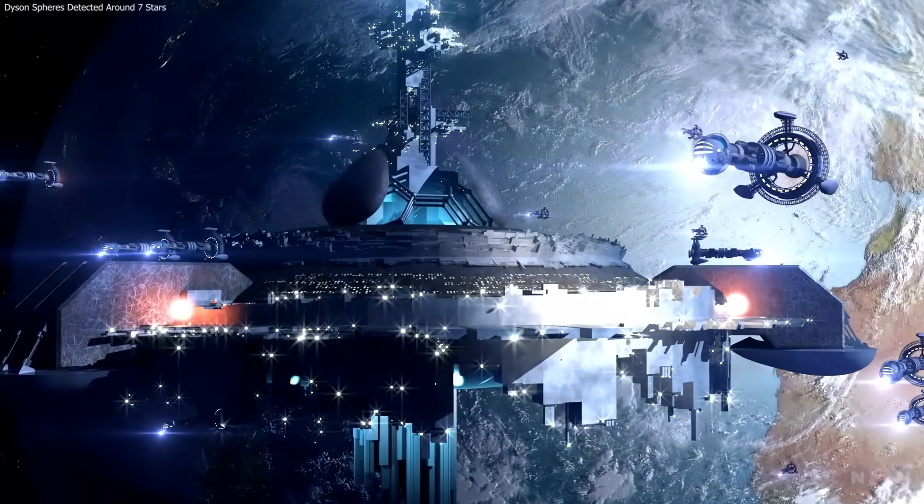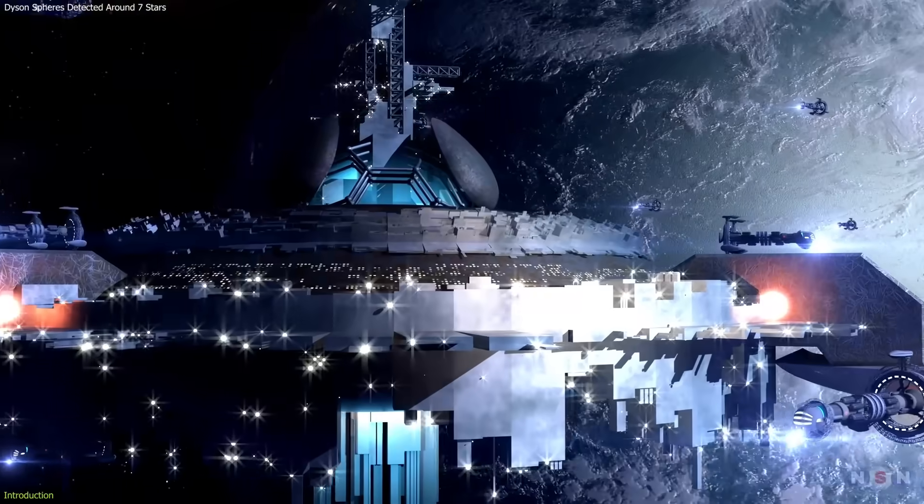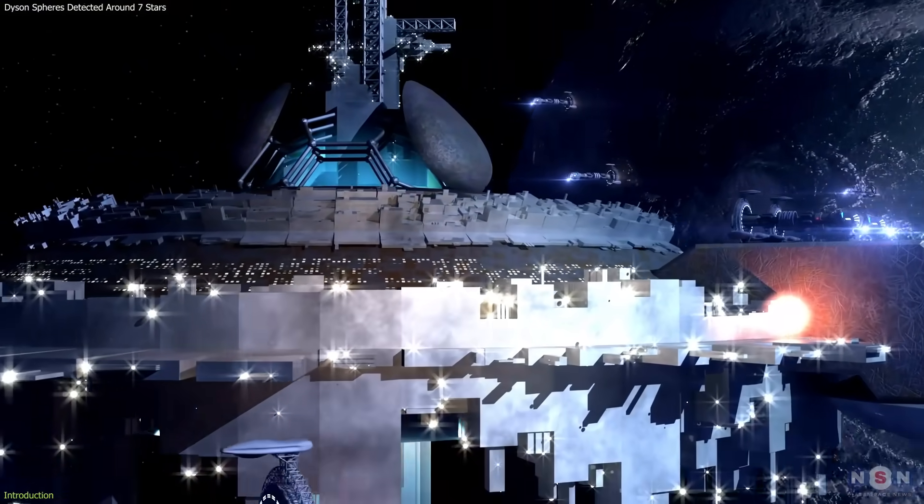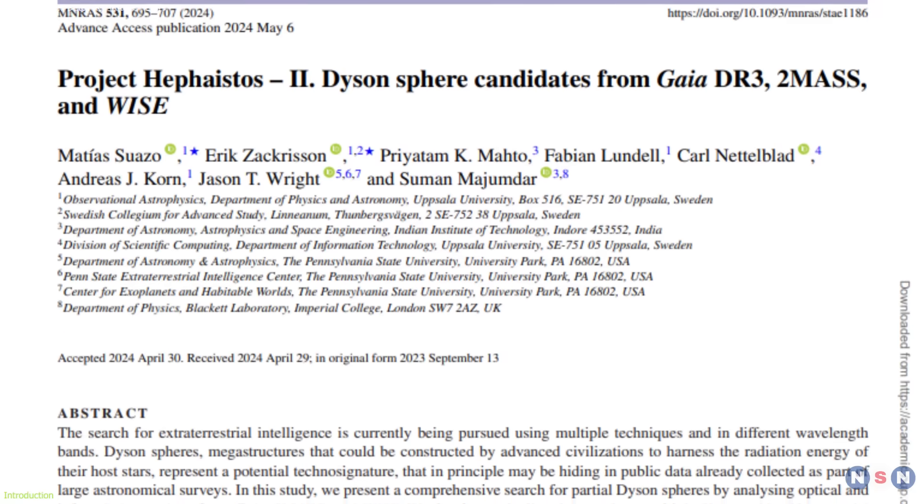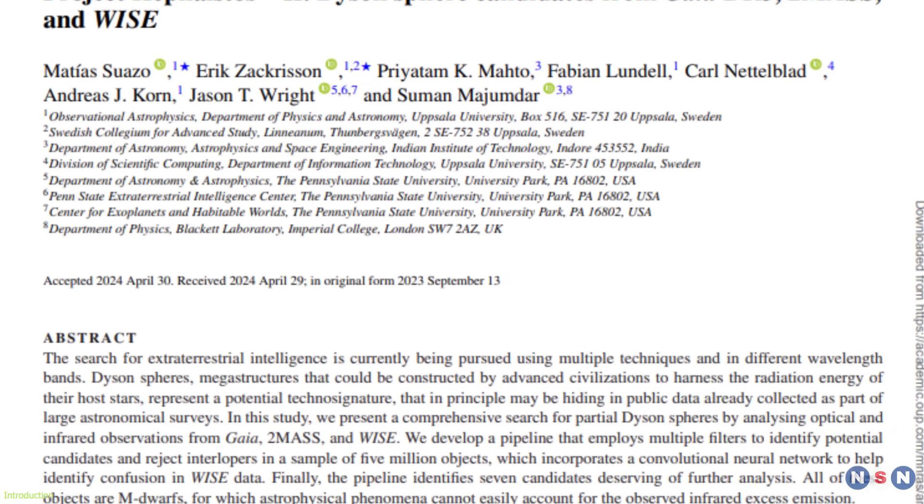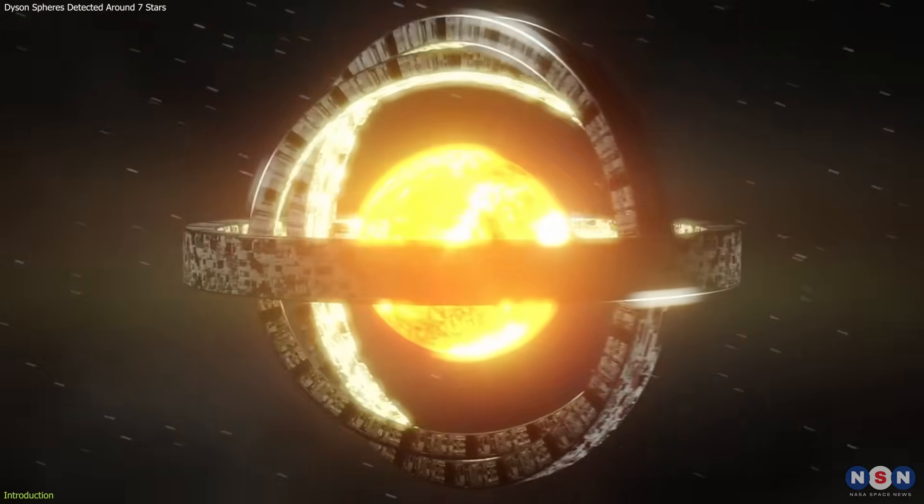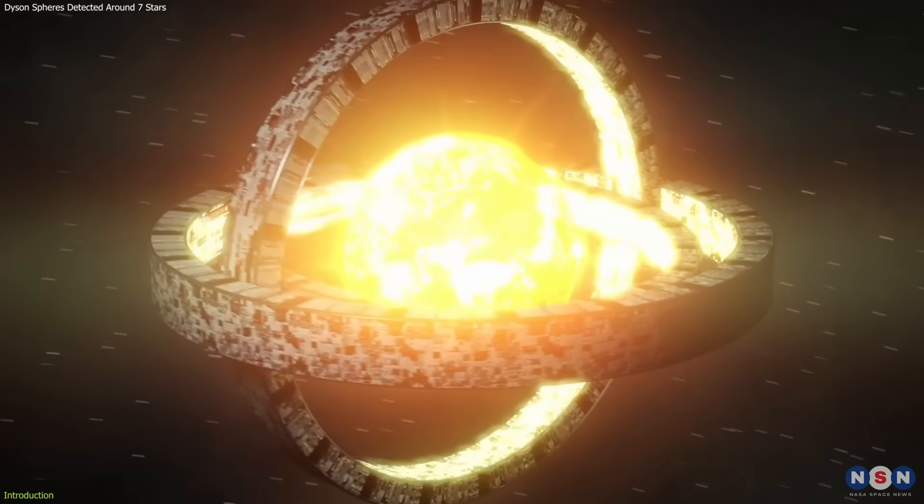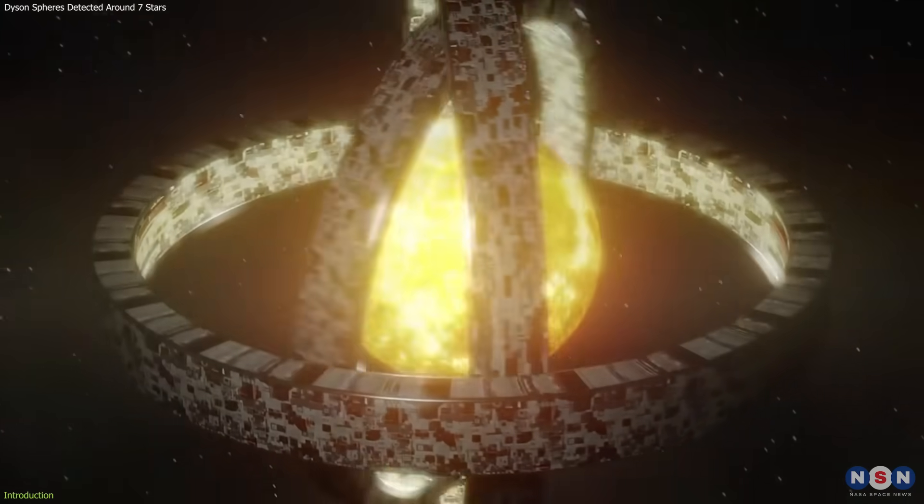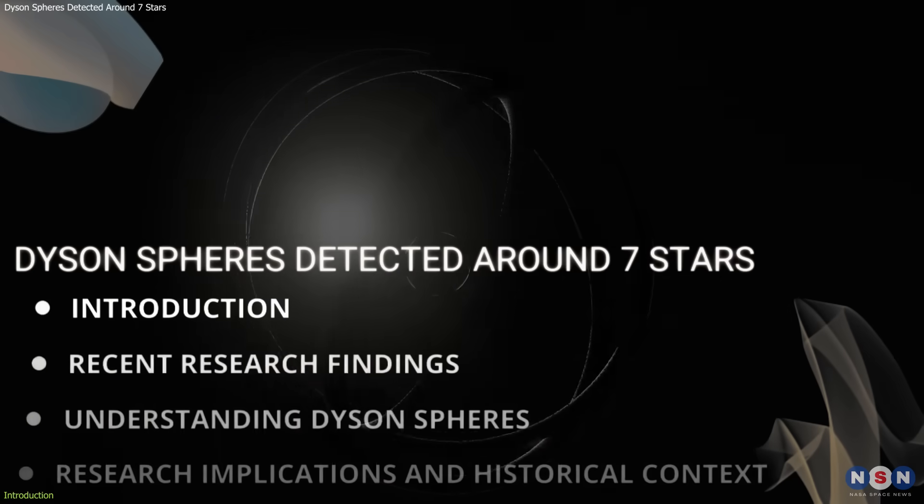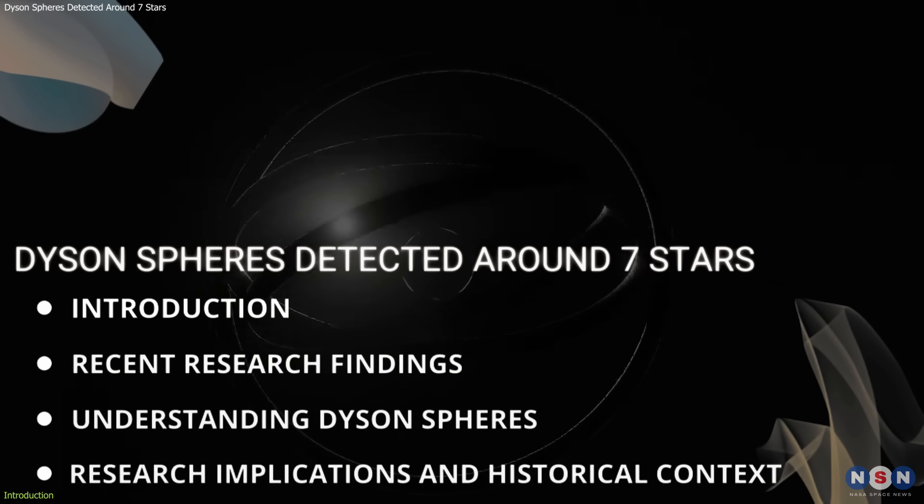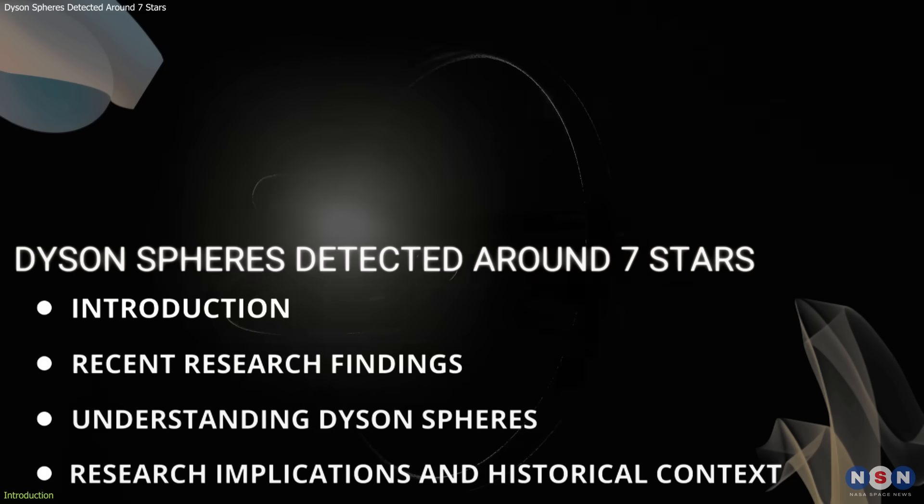Imagine if we could detect signs of super-advanced alien civilizations in our galaxy. Exciting, right? Recent research suggests that at least seven stars in our Milky Way might be surrounded by Dyson Spheres, hypothetical structures built by advanced civilizations to harness energy from their stars. In this video, we will explore the new findings, understand what Dyson Spheres are, and delve into the significance of this discovery.